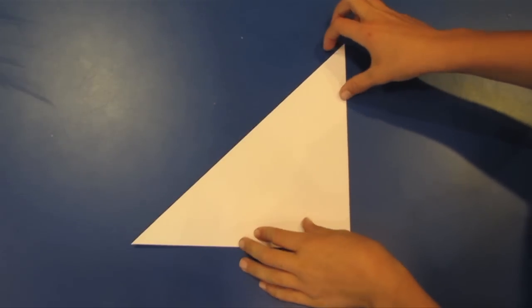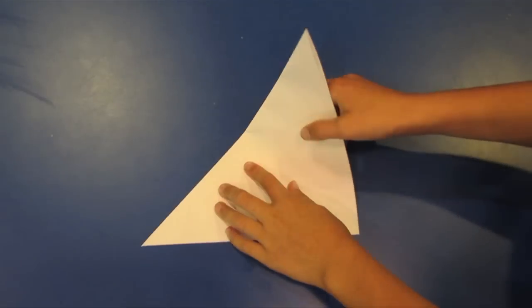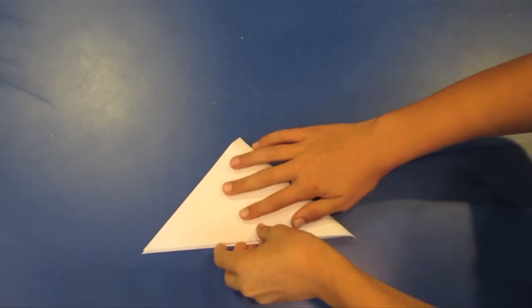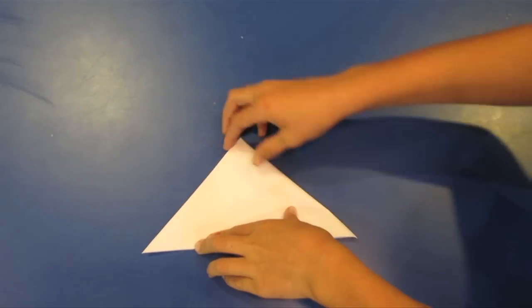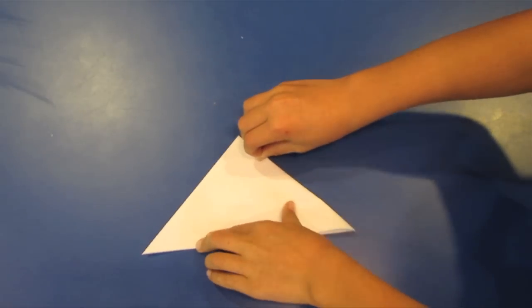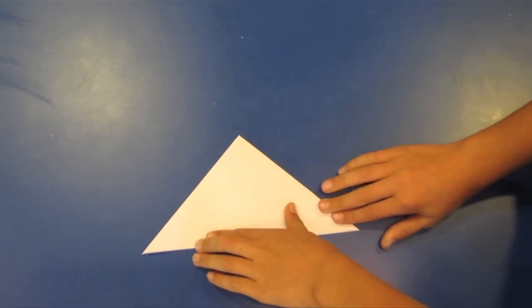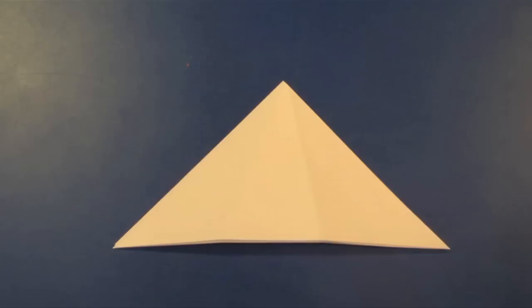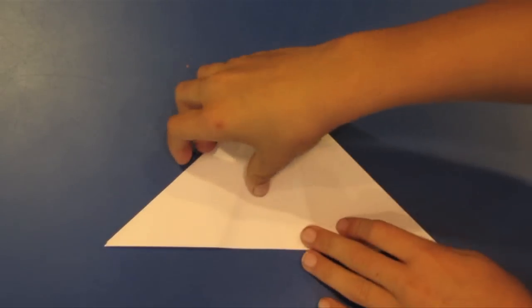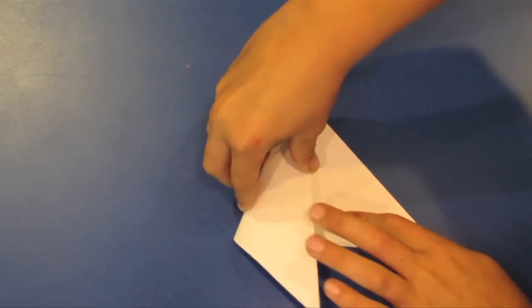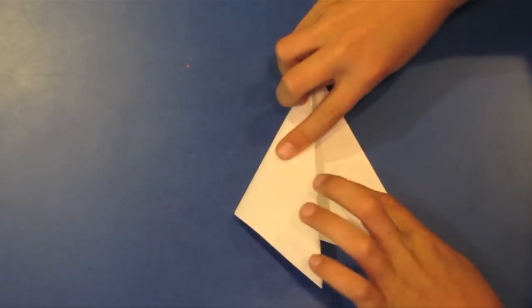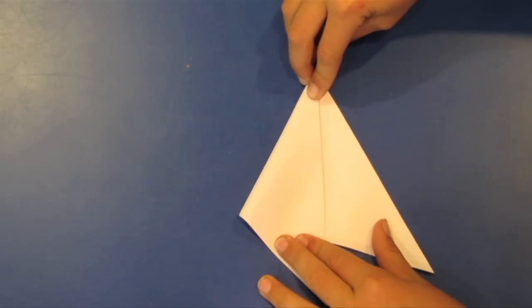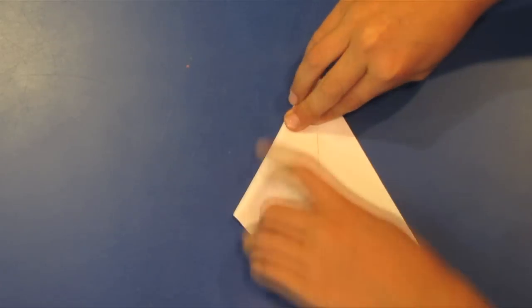Now you're going to want to fold it over again to make another triangle. Next fold it over right to about here and then crease.